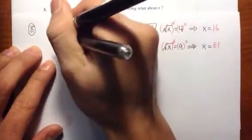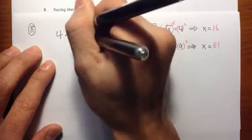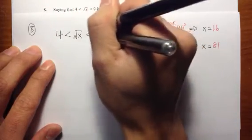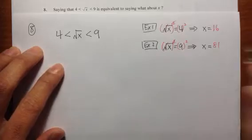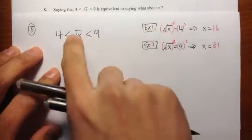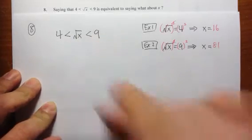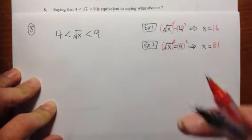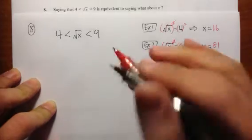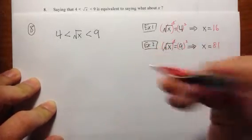But in this question here, we have 4. So let me just write down the equation. We have 4 less than square root of x less than 9. So another way to read this is, as I said earlier, square root of x is in between 4 and 9. What we can deal with square root is just square it. Raise everything to the second power.